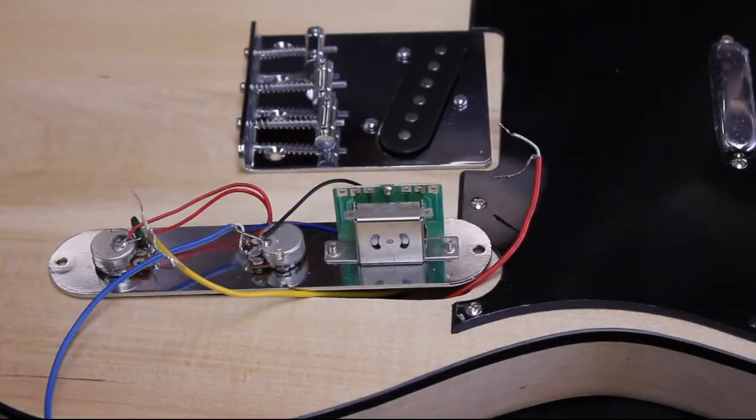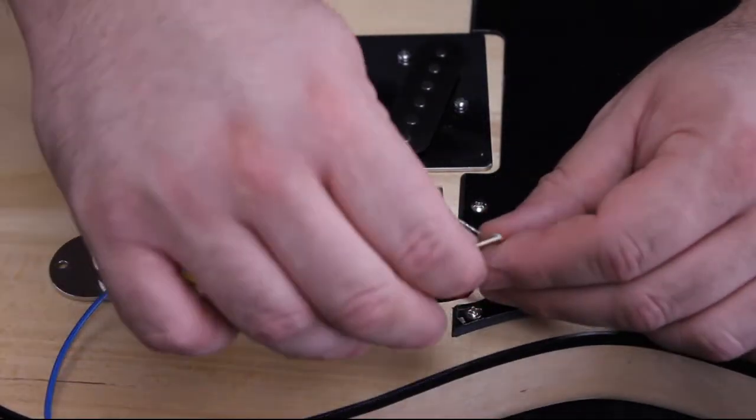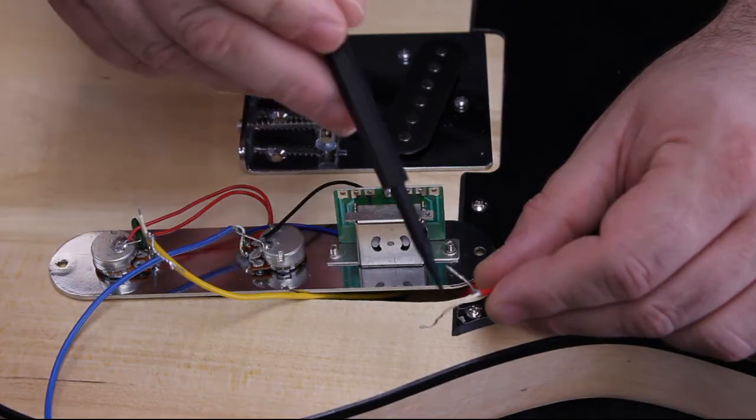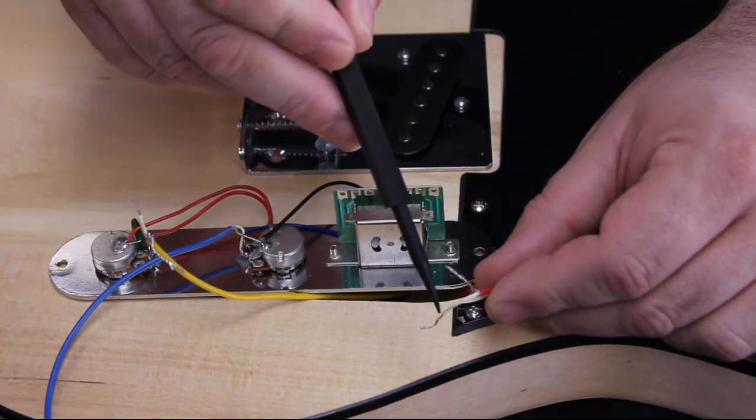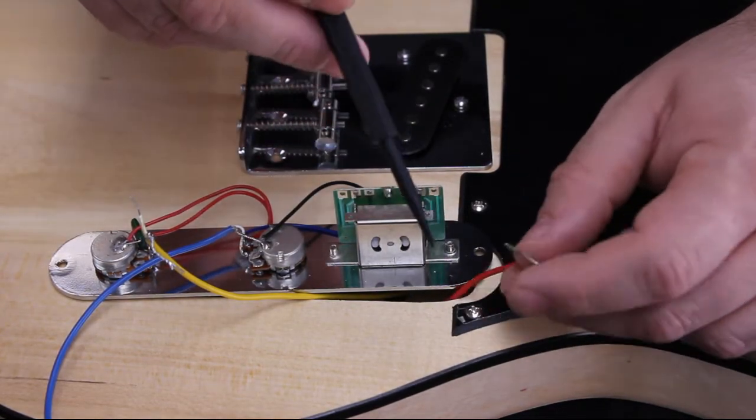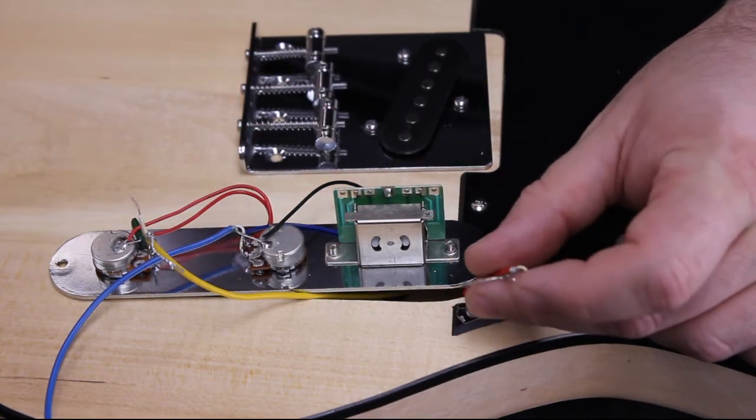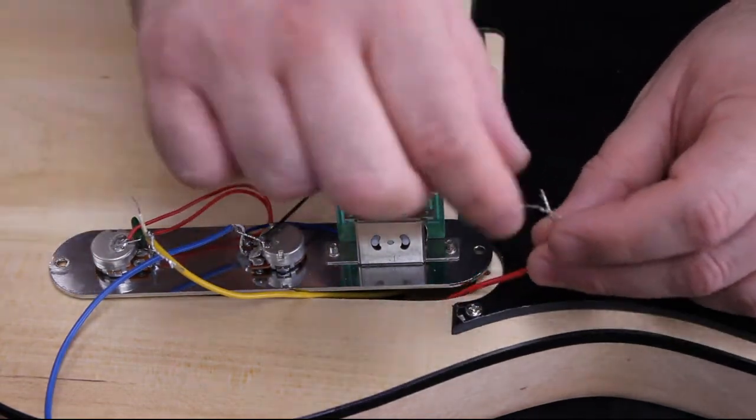We're going to take the pickup wires and install them to the three-way blade switch. The wire with the white shielding is your signal wire, while the bare wire is your ground wire. Red is for the bridge position and yellow is for the neck position.